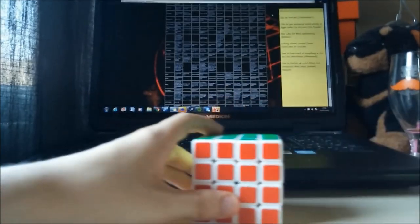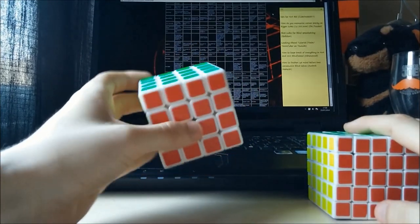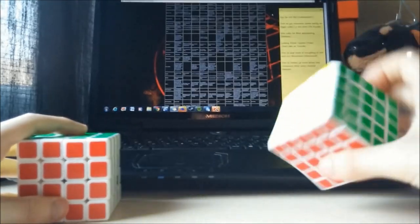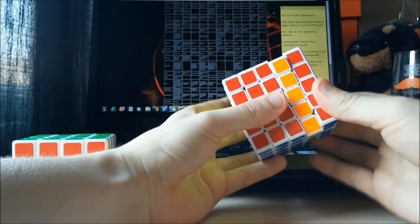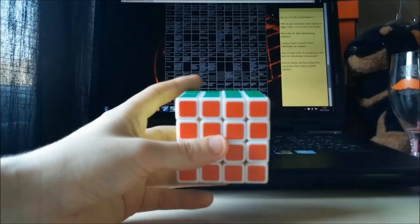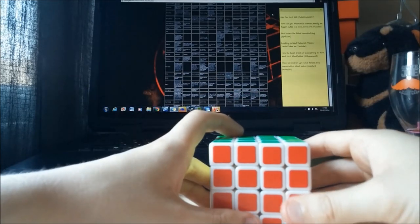Okay, best cubes for blind speed solving. At the time, it's going to be the Moyu Aosu and the Shengshou 5x5. You can mod it somewhat, that makes it better for slice moves so it doesn't lock up at all. But until the Moyu 5x5 comes out, that's the best cube for now, but we'll see.